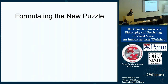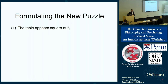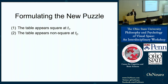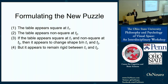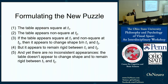So our new puzzle — slightly different from the old puzzle — is to explain how the table can appear to remain rigid when there's a change in its apparent shape. This puzzle can be formulated as an inconsistent set of claims. First, the table appears square at t1 as you view it from above. Second, the table appears non-square at t2 as you view it from the side. Third, if the table appears square at t1 and non-square at t2, then it appears to change shape between t1 and t2. But it doesn't — it appears to remain rigid. And yet, there are no inconsistent appearances.